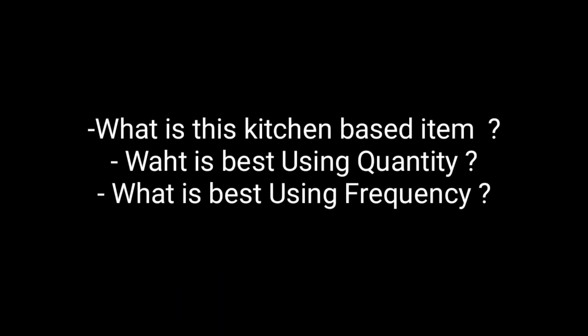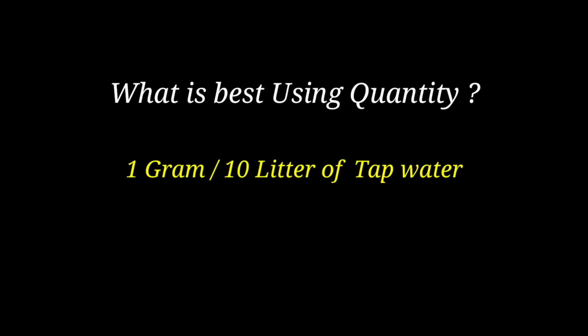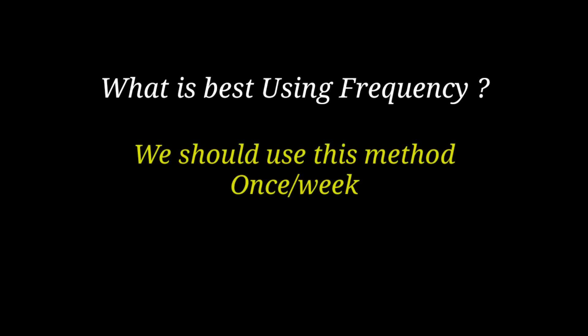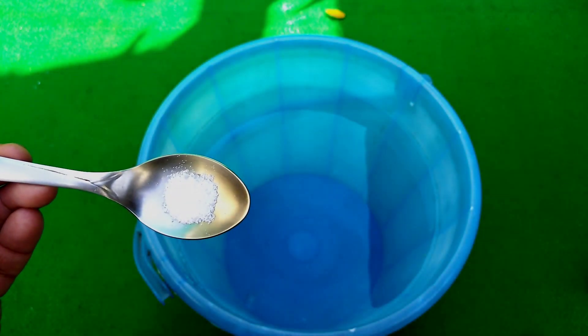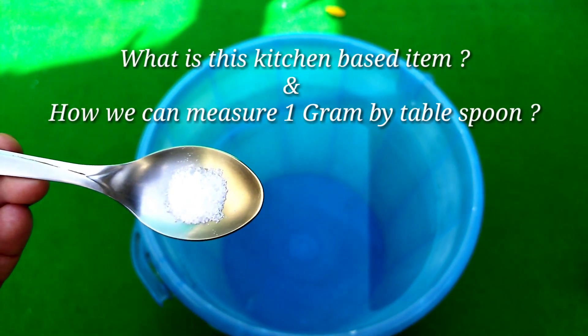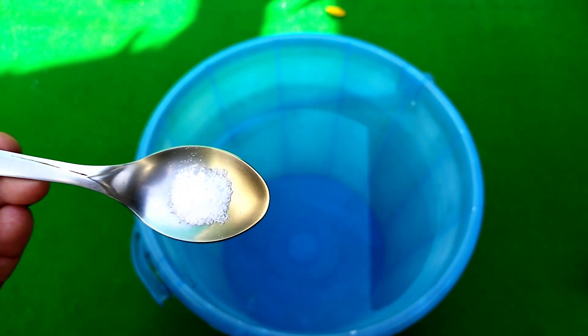Now we will explain about this easily available kitchen-based item — the quantity to use and the frequency. For using quantity, we should add approximately 1 gram in 10 liters of tap water for best results. For frequency, we should use this method once per week to maintain the soil pH for plants. The biggest question is: what is this kitchen-based item, and how can we measure approximately 1 gram using a tablespoon?